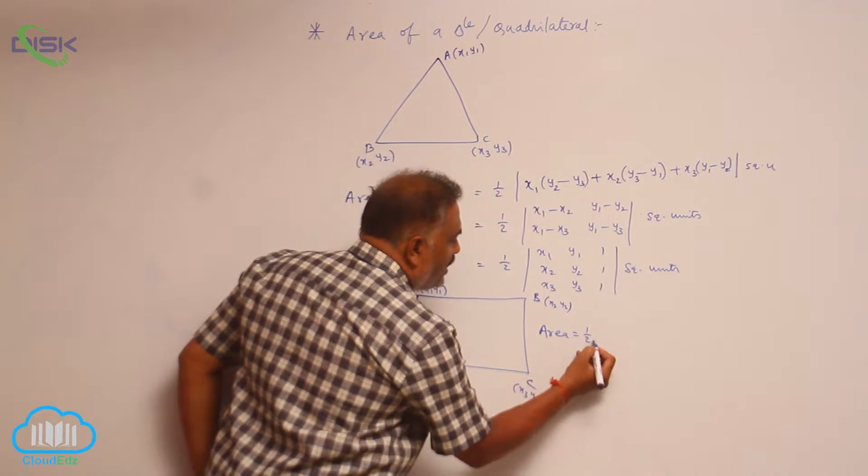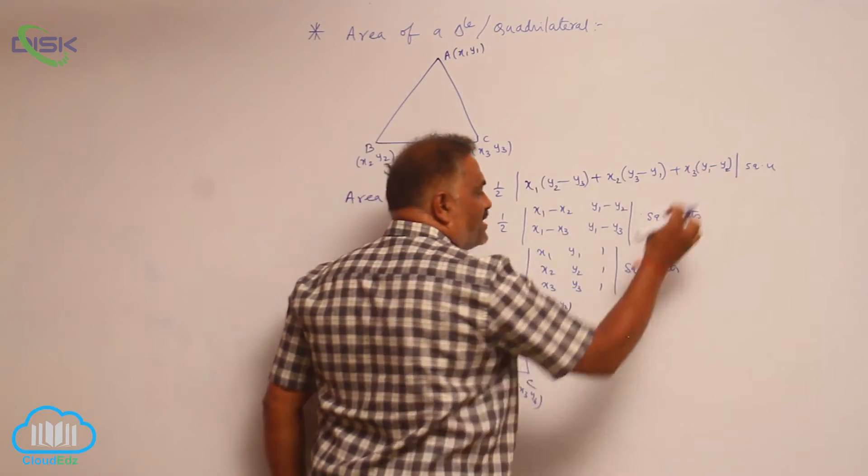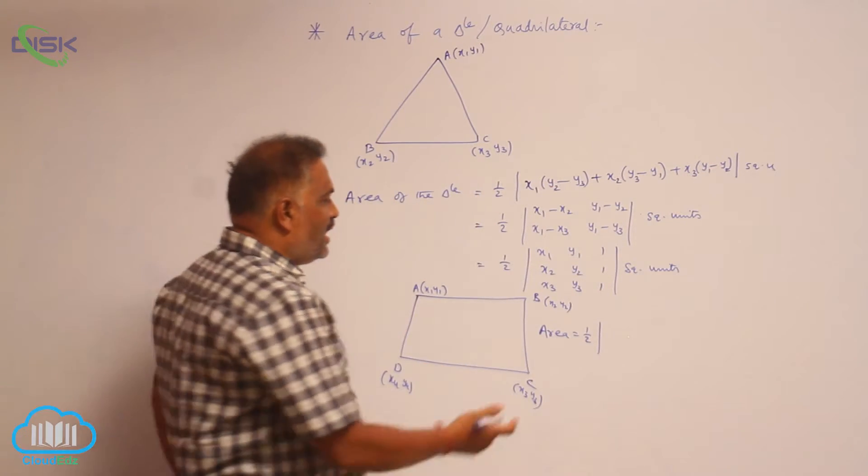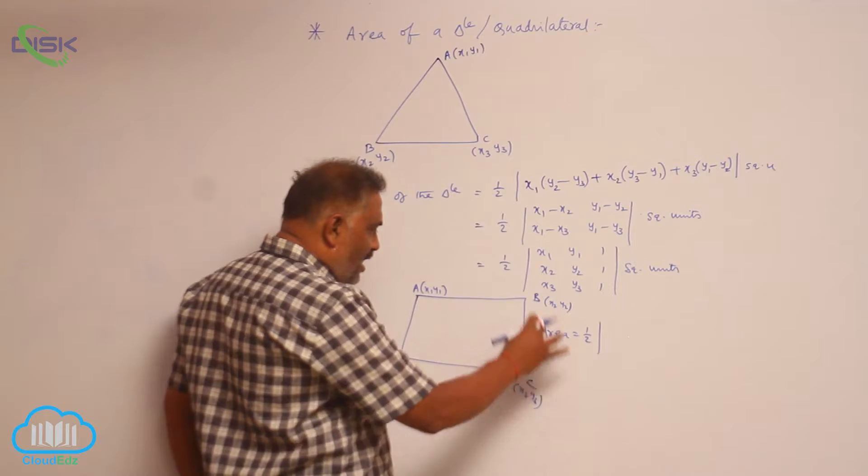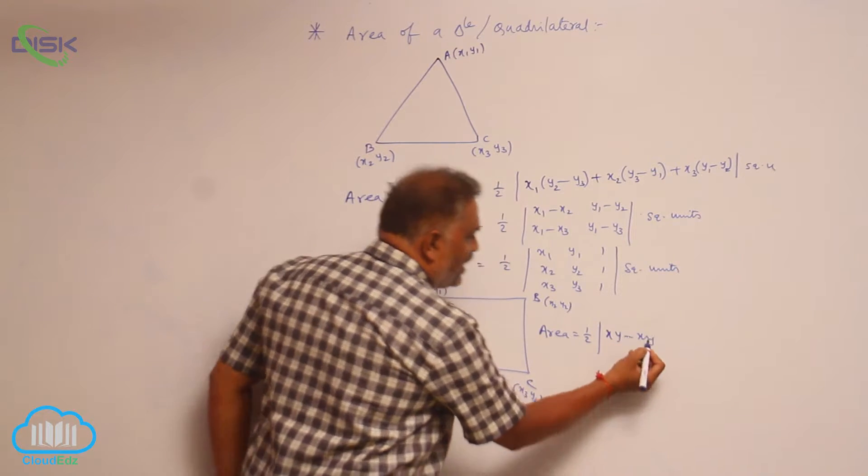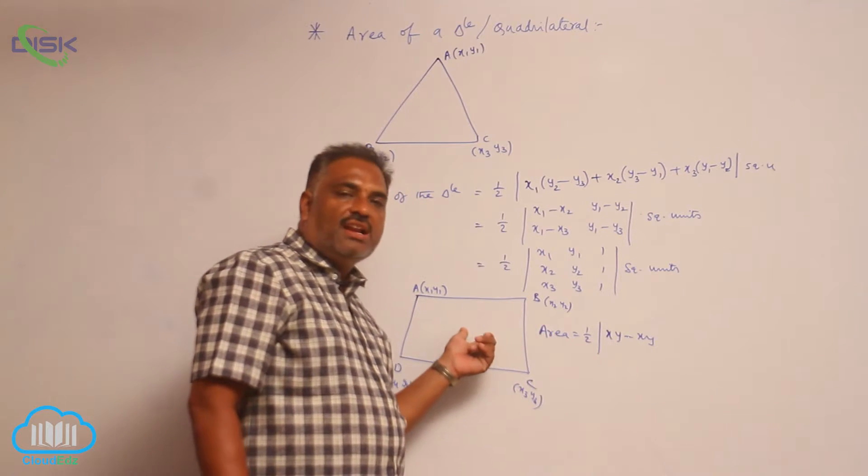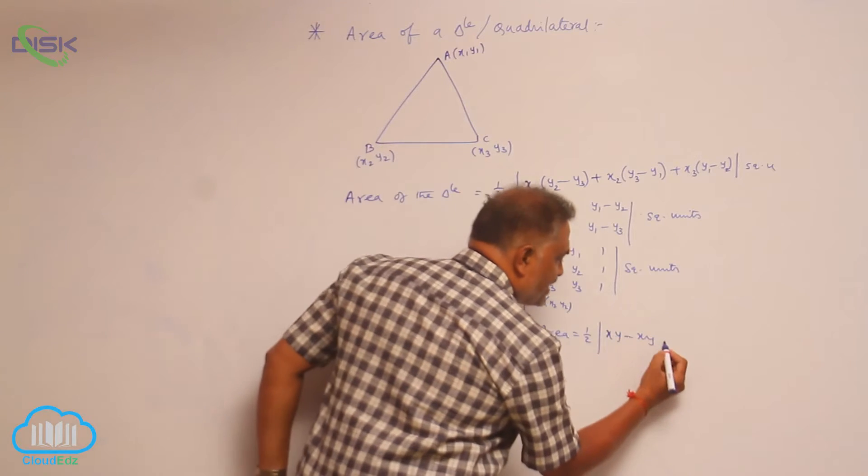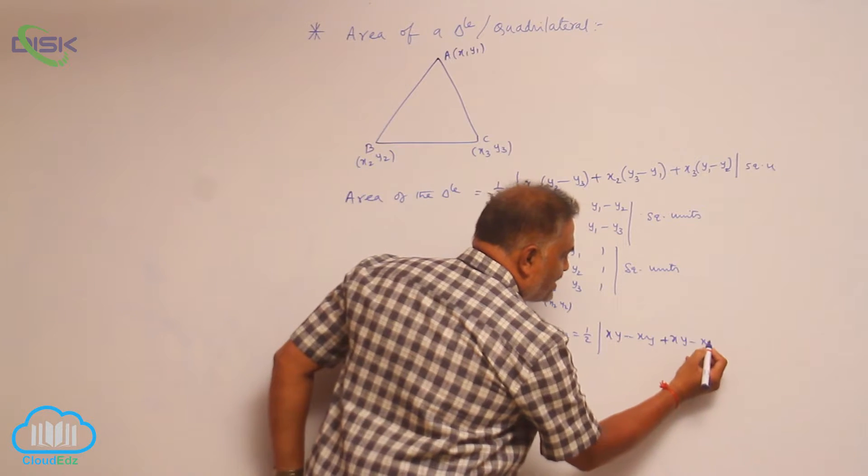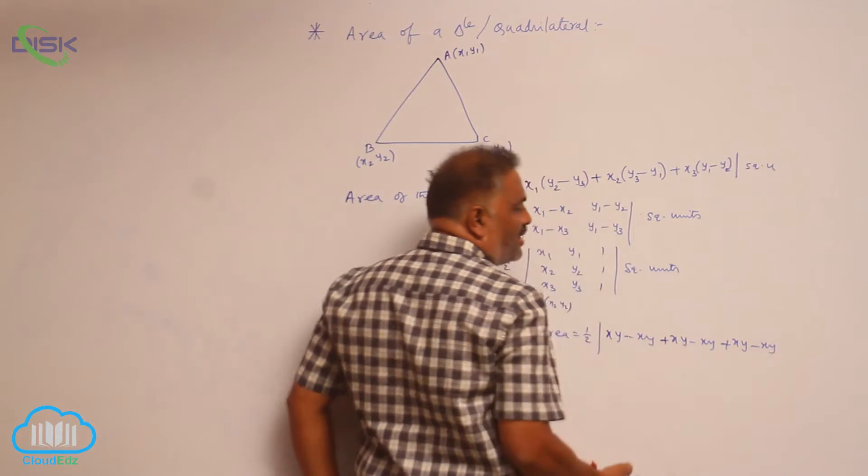I told you already, whenever three vertices are there you wrote three sets like this. Like this only, in calculating the area of quadrilateral you write xy minus xy. If one vertex is there, write like this. Since quadrilateral contains four vertices, you write four sets: xy minus xy, second set, xy minus xy, third set, fourth set.